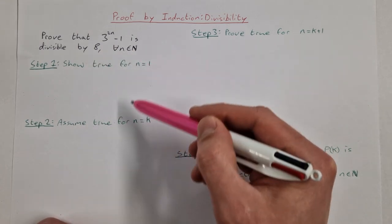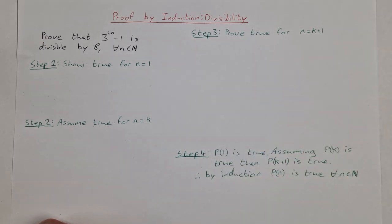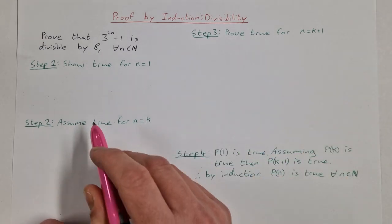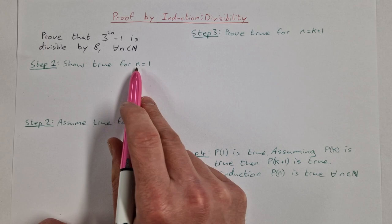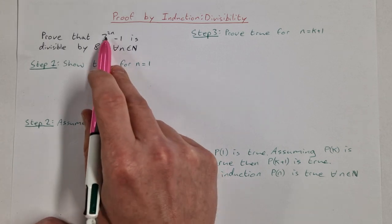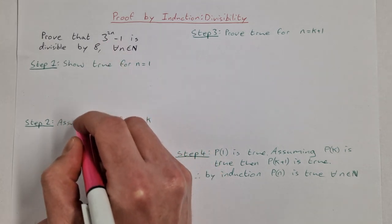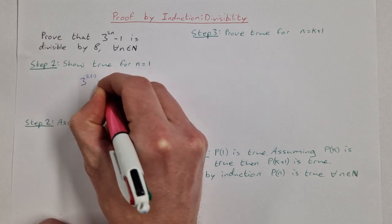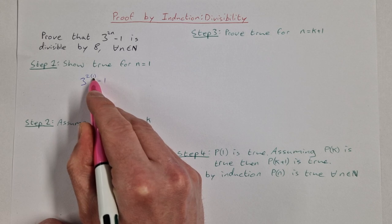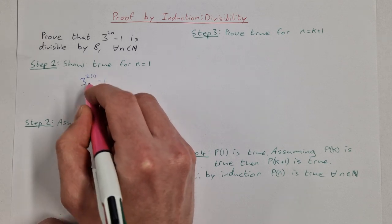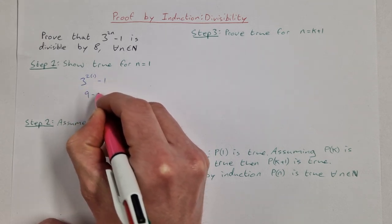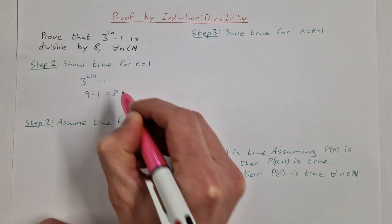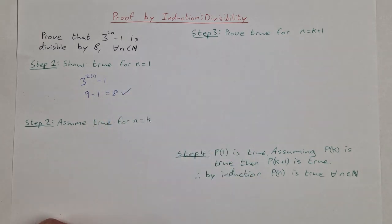The four steps for proof by induction are always the same. I have them written out here and I'm just going to fill them in. Step 1: Show true for n equals 1. That is, sub in 1 for n and see if it's divisible by 8. So that's 3 to the power of 2 times 1 minus 1, which is 3 squared, which is 9 minus 1, which equals 8, and that is divisible by 8.